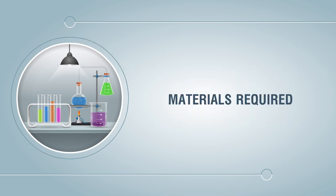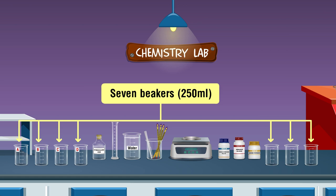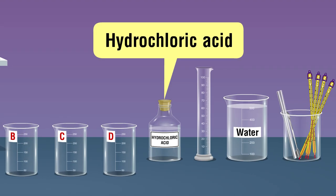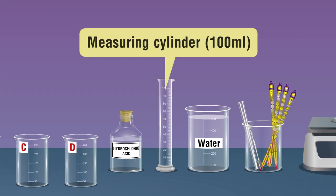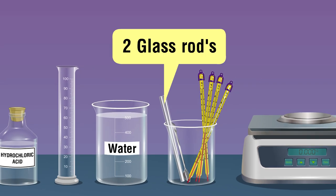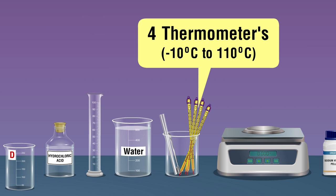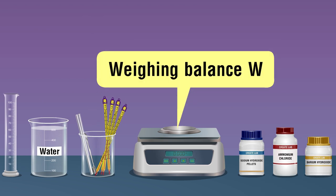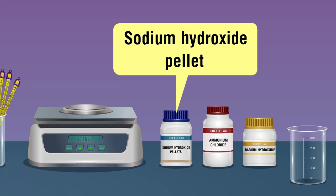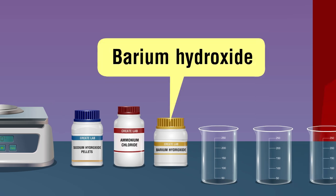Materials required: 7 beakers (250 ml), hydrochloric acid, glass bottle solution, measuring cylinder (100 ml), distilled water, 2 glass rods, spatula, 4 thermometers (10°C to 110°C), weighing balance, sodium hydroxide solution (solid pellets, plastic bottle), ammonium chloride (solid powder, plastic bottle), and barium hydroxide (solid powder, plastic bottle).